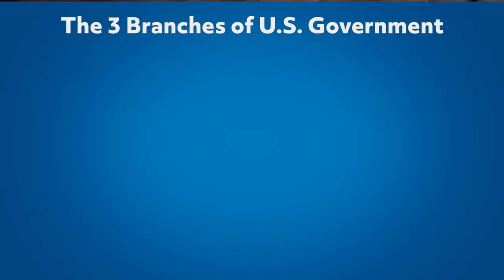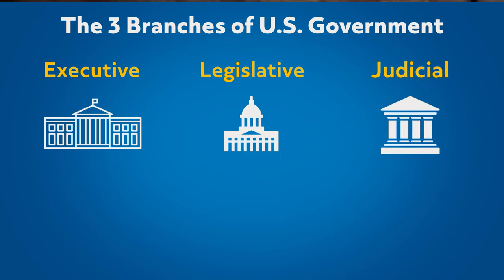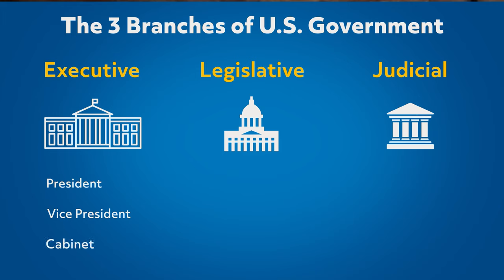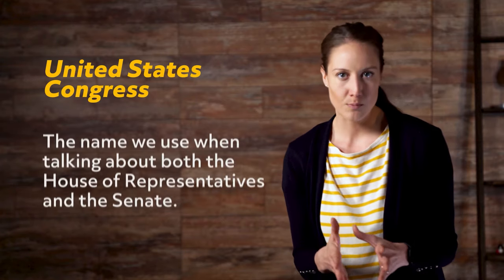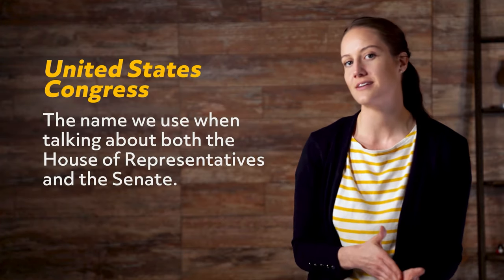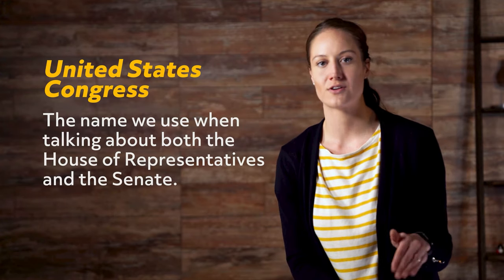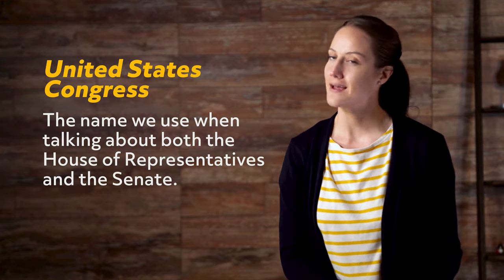The president and vice president, and all of their ever-growing number of staff, form the executive branch. The House of Representatives and Senate are the legislative branch, and the Supreme Court and all of the lower federal courts comprise the judicial branch. Those three groups must work together. There are certain things the president cannot do without direct approval by Congress — the name we use when talking about both the House of Representatives and the Senate — and any laws that Congress passes must be signed by the president.